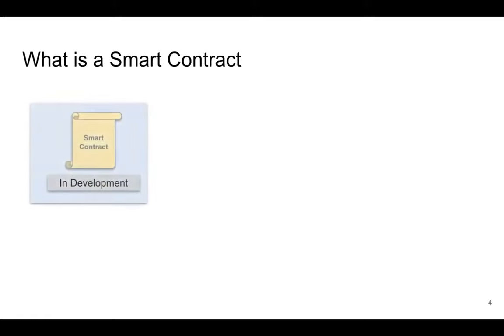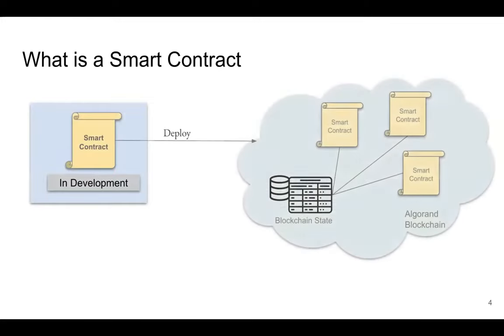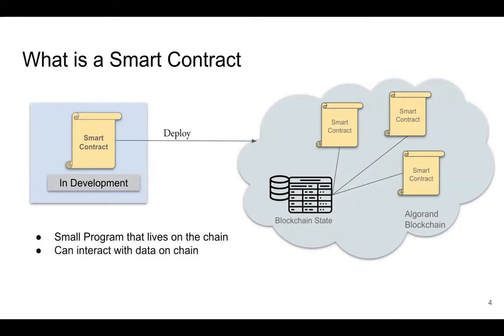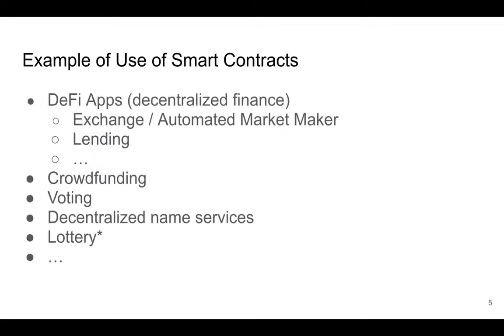So what is a smart contract? Essentially, a smart contract is a piece of code that lives on the blockchain. You deploy it to the blockchain — it lives there. The idea is that a smart contract can interact with all the data on-chain, and you can from outside of the blockchain interact with the smart contract. At the end of the day, a smart contract is really just a program living on the blockchain.